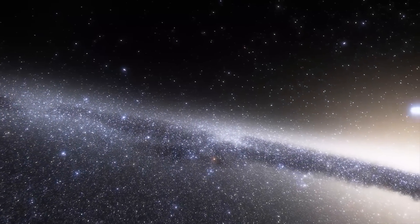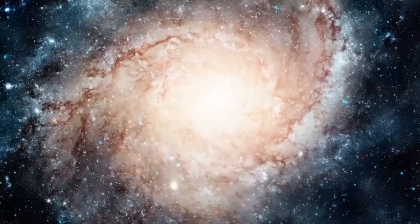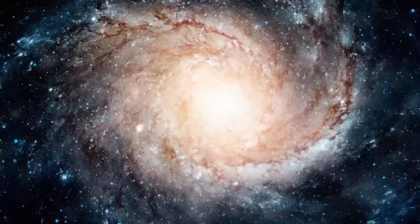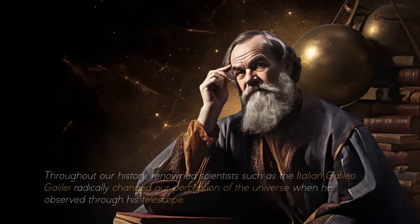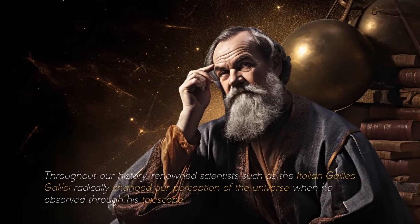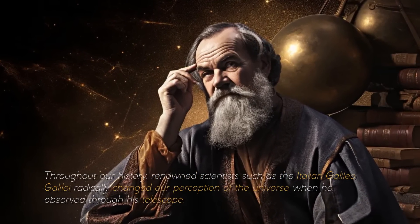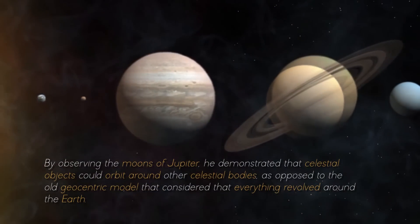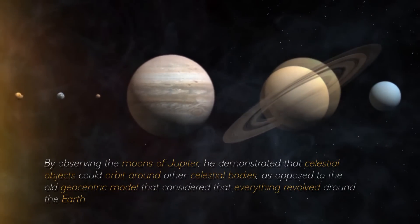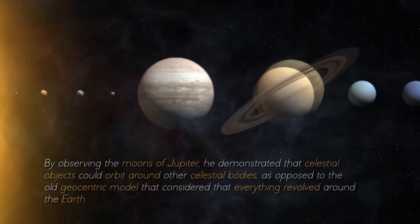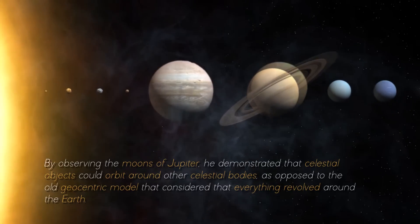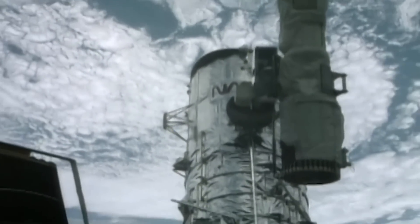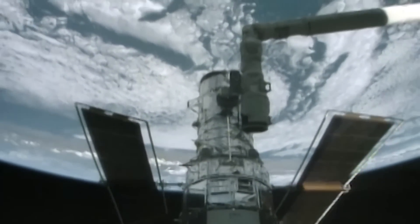Using simple methods to observe the magnificent stars in the sky, they were amazed by celestial patterns and possible connections between Earth and the firmament. Throughout our history, renowned scientists such as Galileo Galilei radically changed our perception when he observed through his telescope. By observing Jupiter's moons, he demonstrated that celestial objects could orbit around other bodies, as opposed to the old geocentric model, thus revolutionizing science and ushering in a new era in astronomy.